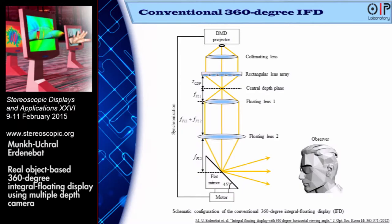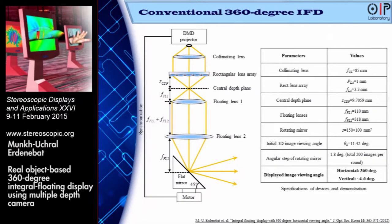Let me explain this system, titled as the conventional three-dimensional 360 degree integral floating display. The elemental image projected by the DMD projector is reconstructed as three-dimensional perspectives through the lens array. Double floating lenses relay the three-dimensional perspectives through the center of the mirror when the mirror is rotated at very high speed by the motor. We successfully demonstrated full parallax 360 degree viewing angle three-dimensional display.